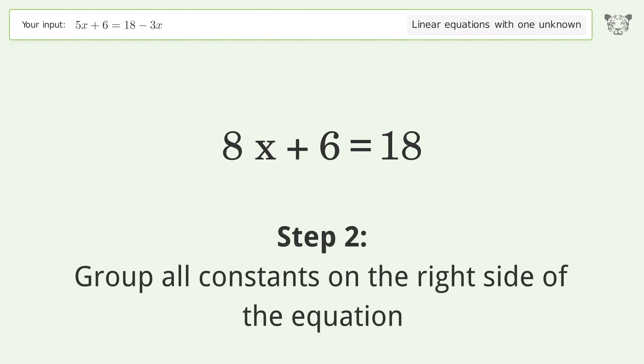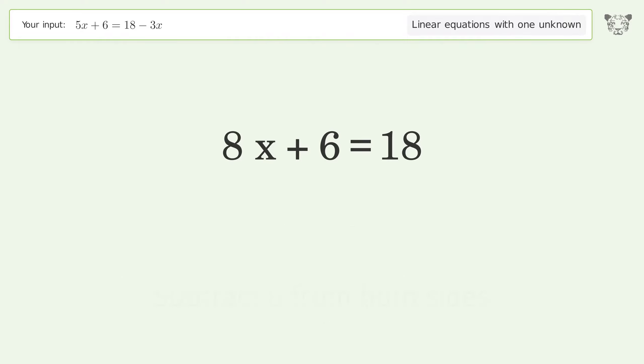Group all constants on the right side of the equation. Subtract 6 from both sides. Simplify the arithmetic.